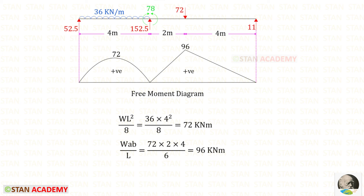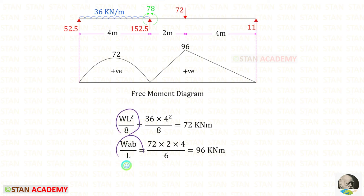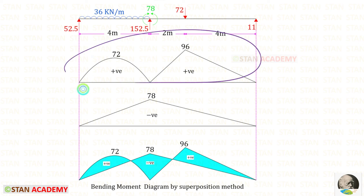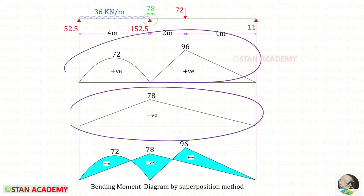Now we draw the bending moment diagram using the superposition method. First we draw the free moment diagram by considering each span as a separate simply supported beam. Using the standard formulas we find the moments and draw the two free-moment diagrams. Then using the moment at B we draw the end-moment diagram, and combining both gives the BMD by superposition.